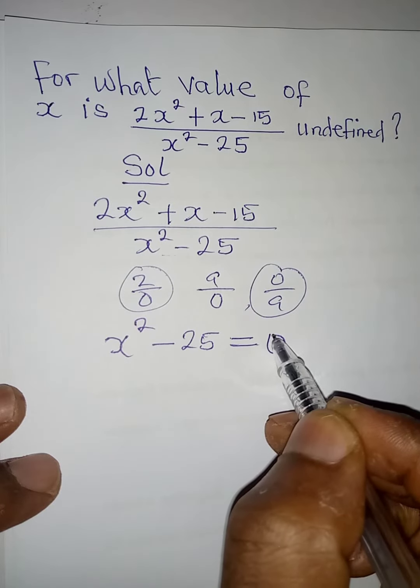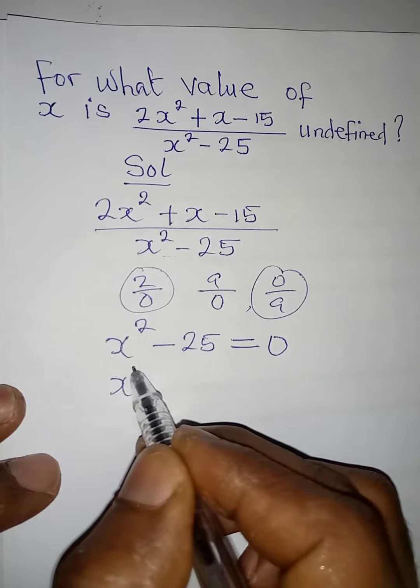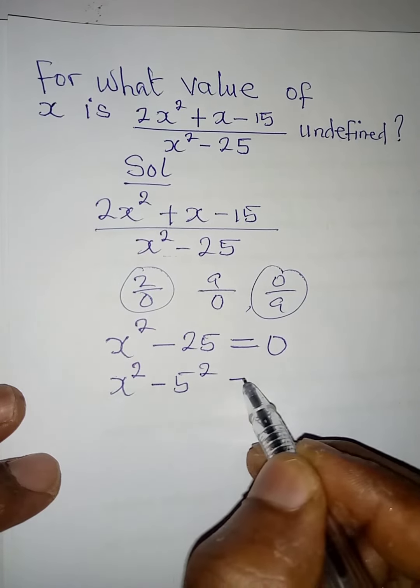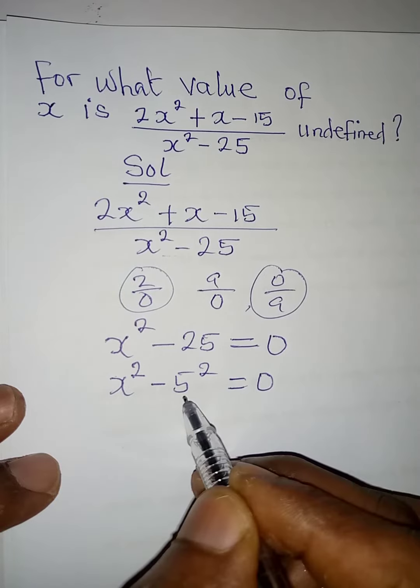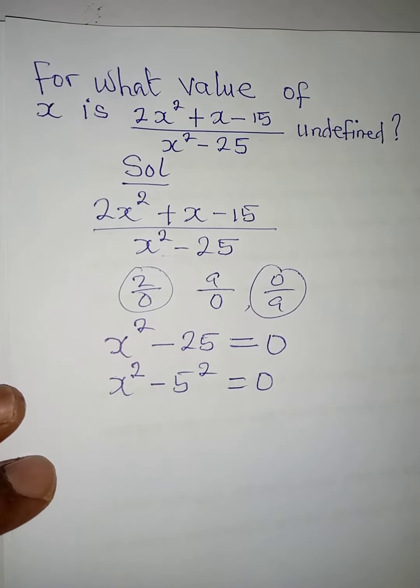And I want us to apply difference of two squares here because this is the same thing as x squared minus 5 squared equal to 0, because 5 squared will give us 25. Now applying the principle of difference of two squares, we are going to have x plus 5 into bracket x minus 5 equals 0.